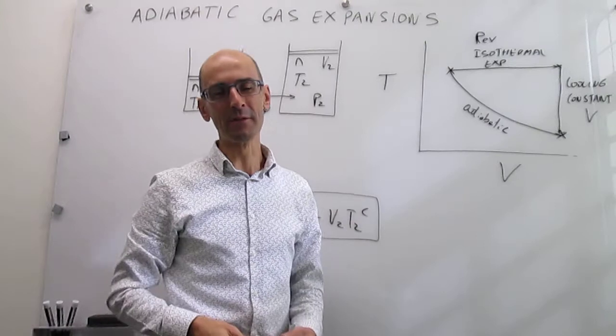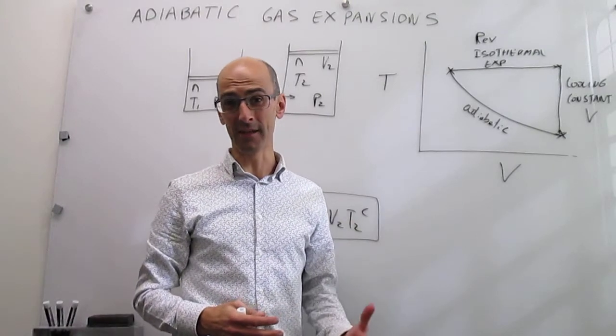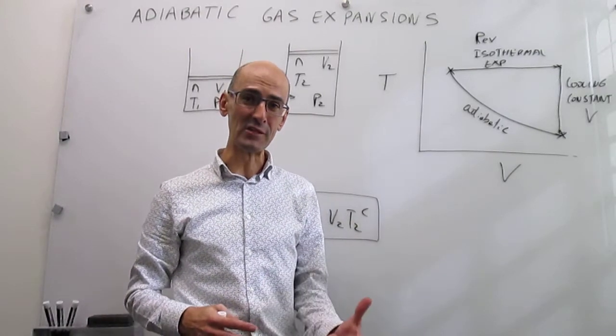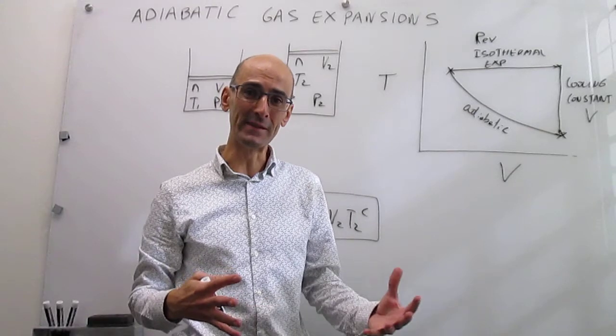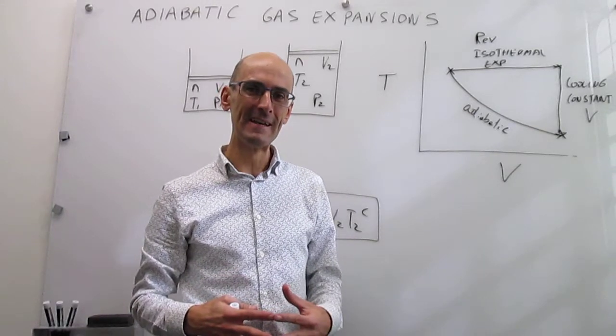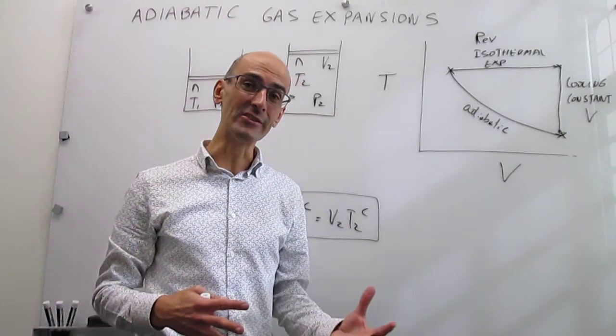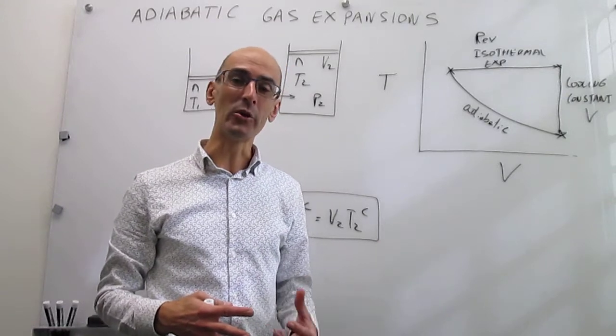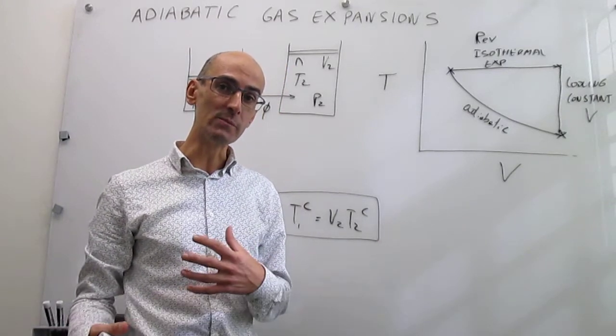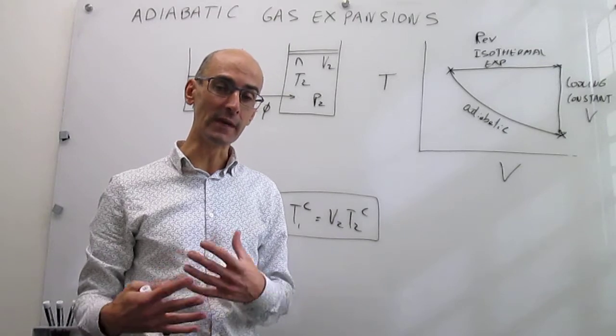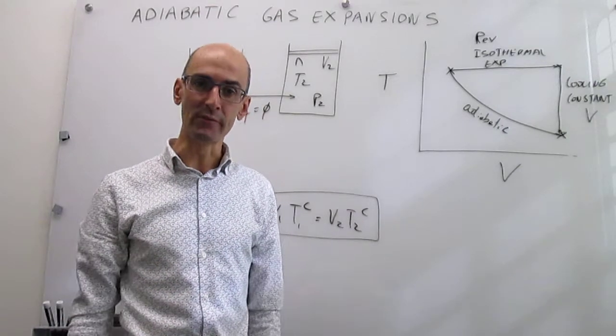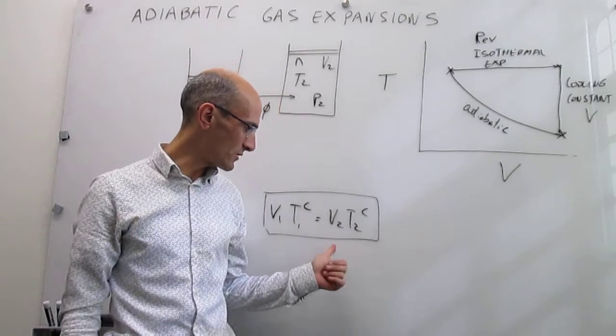We have devoted the last couple of videos to understanding adiabatic gas expansions. In the first video, we set up what that gas expansion is and calculated the change in internal energy and adiabatic work. In the second video, we have seen a relationship between the initial temperature and volume of the gas and the final temperature and volume. And we have that expression right here.